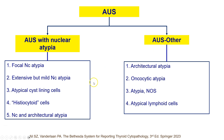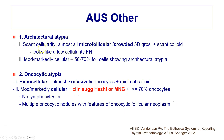Now let's move on to AUS other. Architectural atypia is present when there are few cells and almost all are arranged in either crowded three-dimensional groups or microfollicular groups, with scant colloid in the background. The other scenario is where there is more cellularity but roughly half or slightly more than half of the cell population shows architectural atypia. If almost all the cell population shows architectural atypia, that would bump it into the follicular neoplasm category; at around half to two-thirds, it remains AUS other.